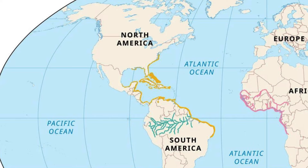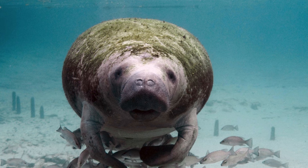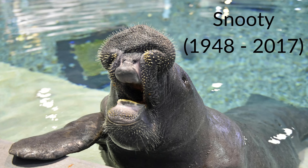The West Indian manatee, Trichechus manatus, has a very wide range on the eastern coast of South and Central America, all across the Caribbean, and even on the eastern coast of the United States. The West Indian manatee is the largest species of Sirenian, growing to a length of 4.6 metres or 15 feet long, weighing up to 1,655 kilograms, or 3,649 pounds. The West Indian manatee also has the second longest life expectancy of any Sirenian, with most living to around 50 years old, and one individual named Snooty lived for 69 years, from 1948 to 2017.